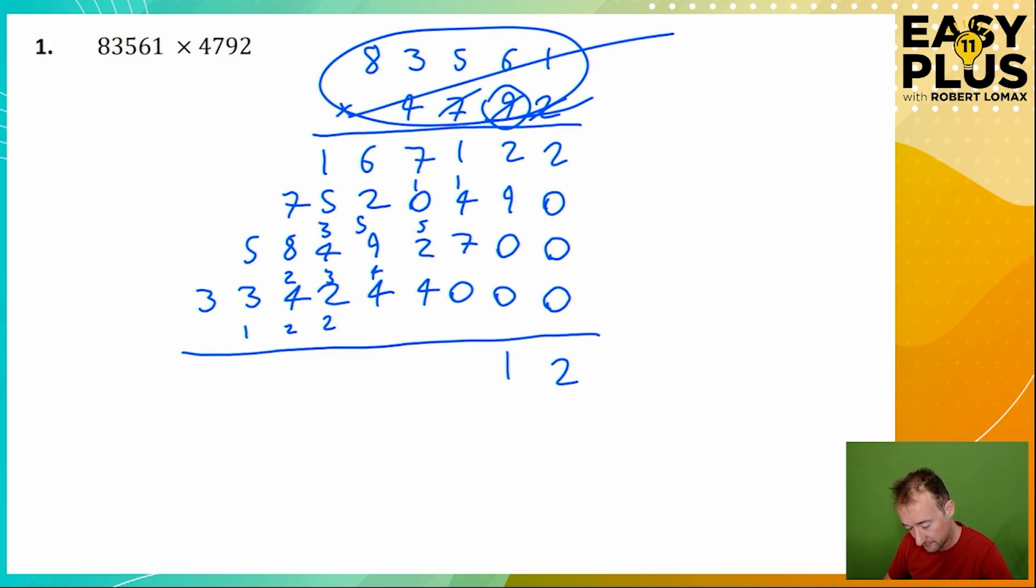9 plus 2 is 11, carry the 1. 1 plus 4 is 5, plus 7 is 12, plus the carried 1, 13. 7 plus 2 is 9, plus 4 is 13, plus the carried 1, 14.